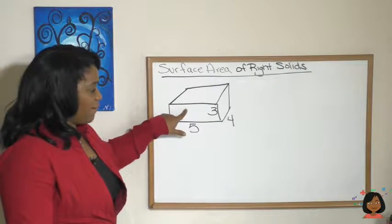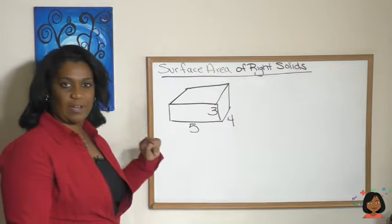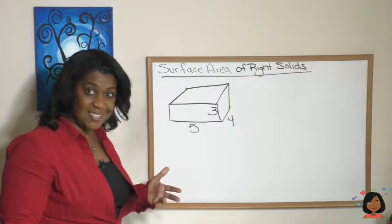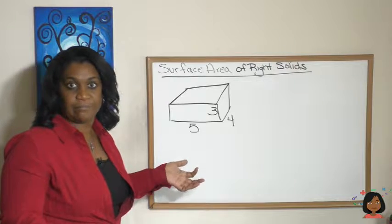Watch. We have the one on the front and then one on the back. And then we got one over here and one over here on the sides. The one on the top, one on the bottom. Those are all of the faces or surfaces.